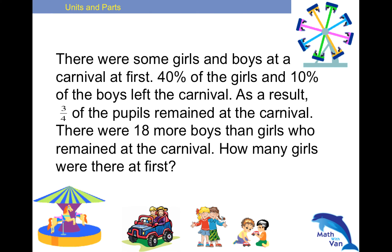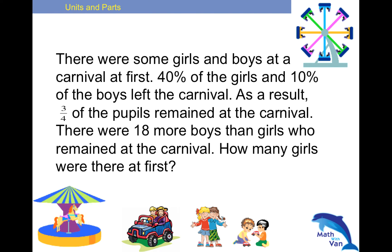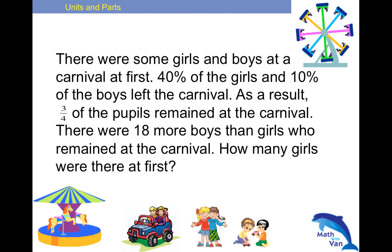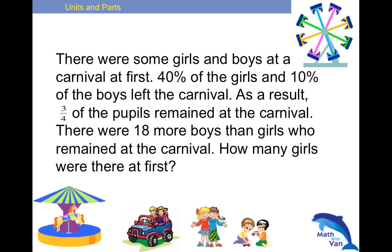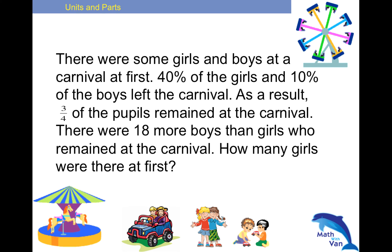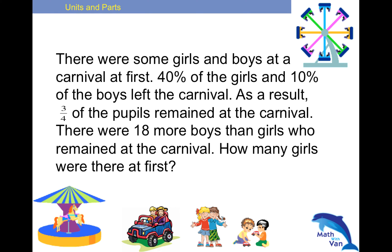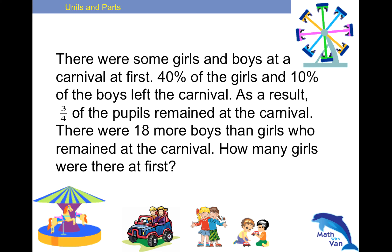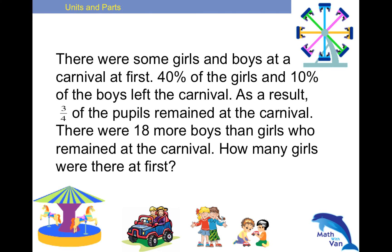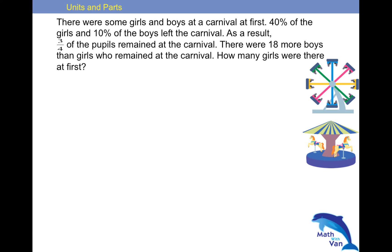Remember, you cannot add 40 to 10 or take 90 minus 60, whatever it is — because these two are referring to different bases: the girls and the boys. So how would I approach this question? For illustration and understanding, I may want to draw a model. But you can actually skip the model part if you understand this very simple concept of units and parts in order to differentiate the two different bases.